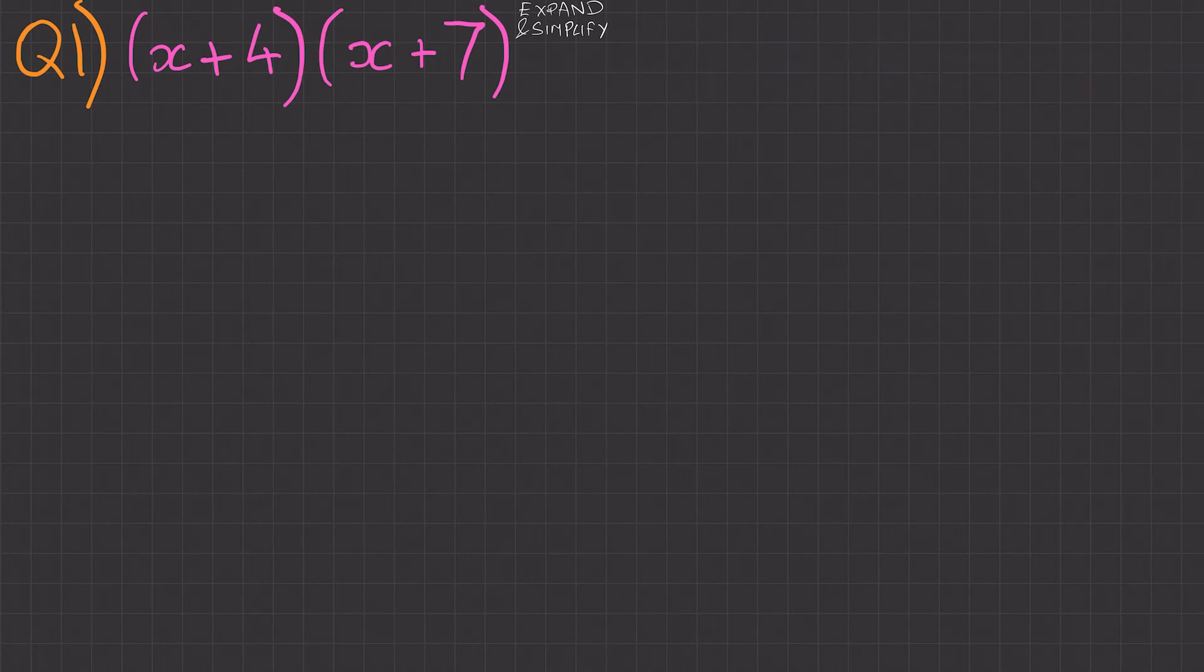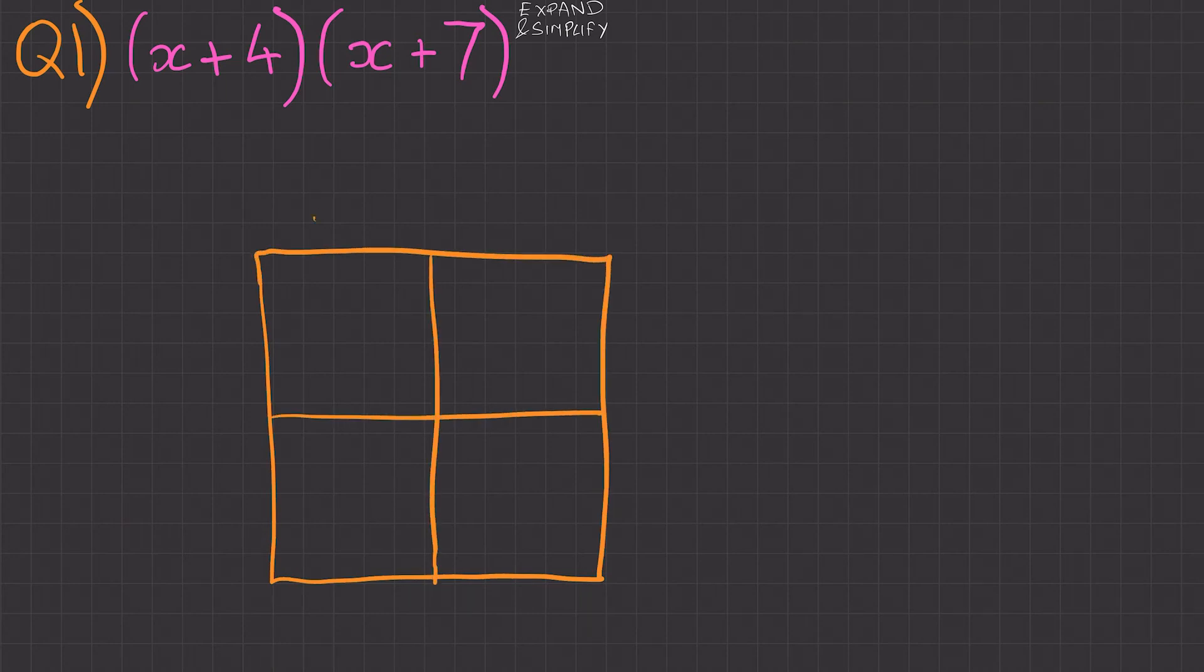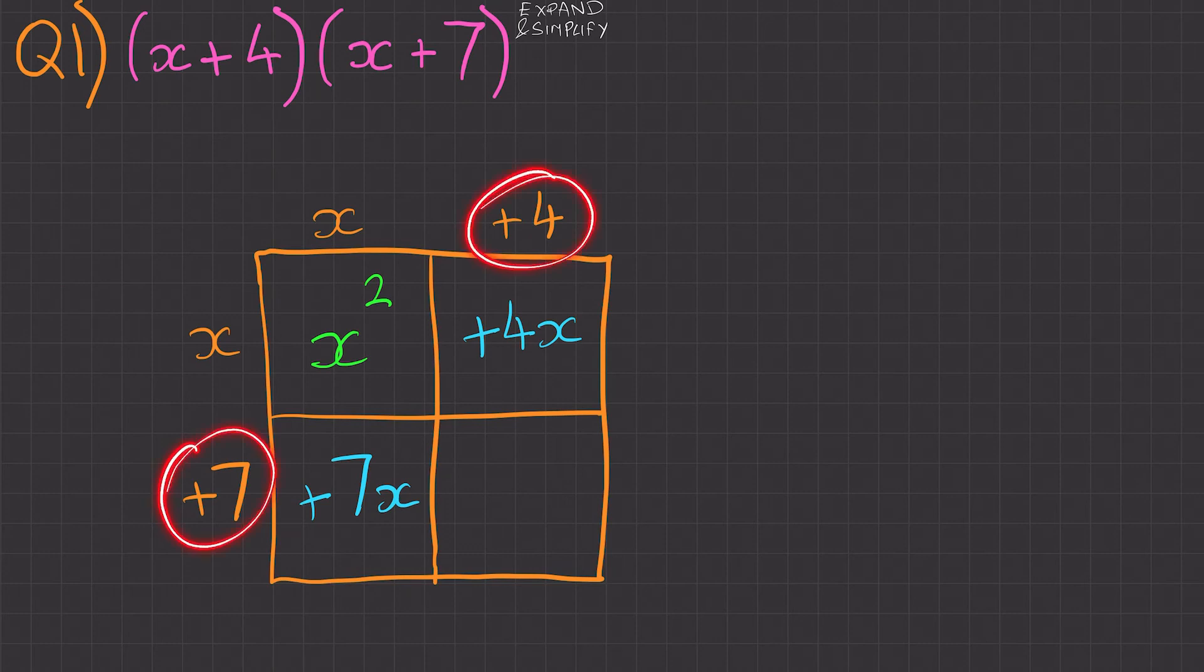So the first question, x plus 4 times x plus 7. I'm going to draw the grid. At the top x plus 4 and at the side x plus 7. x times x equals x squared. x times 4 equals 4x. x times 7 equals 7x. And 7 times 4 is 28.